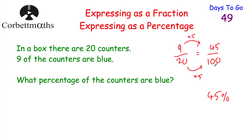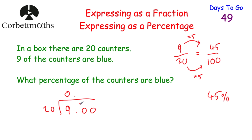Another way to change the fraction to a percentage is to convert the fraction to a decimal first. The line in a fraction means divided by, so we do 9 divided by 20. How many 20s go into 90? That's 4, remainder 10. How many 20s go into 100? That's 5. So 9/20 as a decimal is 0.45. To convert the decimal to a percentage, multiply by 100, giving 45%. So the answer is 45%.